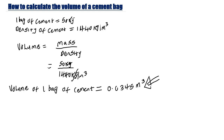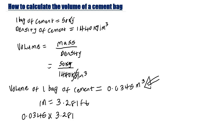This is the volume of one bag of cement in meter cube. Now if you want to get this in cubic feet, you just need to multiply by 3.281 cubed, because one meter is equal to 3.281 feet. So multiply 0.0345 by 3.281 raised to the power of three, and you are going to get 1.25 cubic feet. So this is the volume of one bag of cement in cubic feet, while 0.0345 is the volume in meter cube.